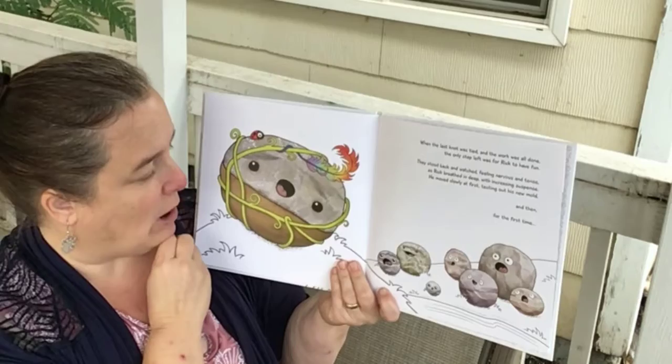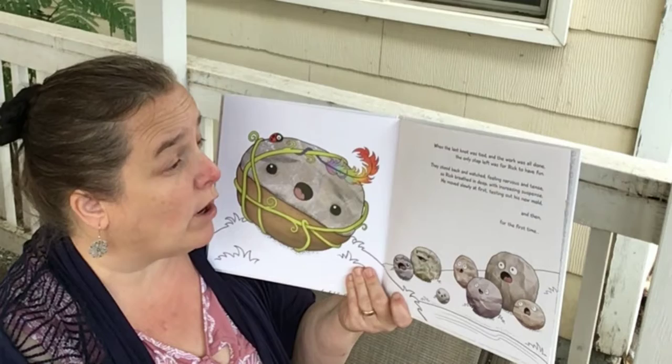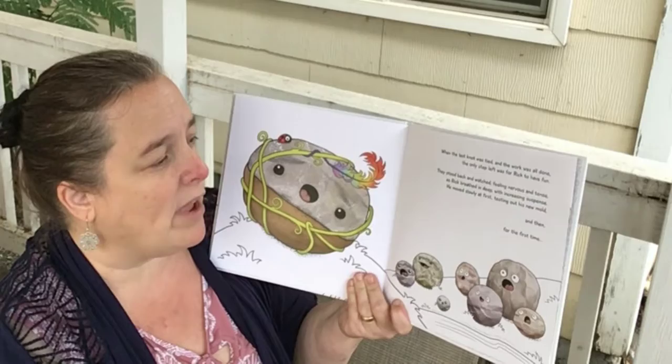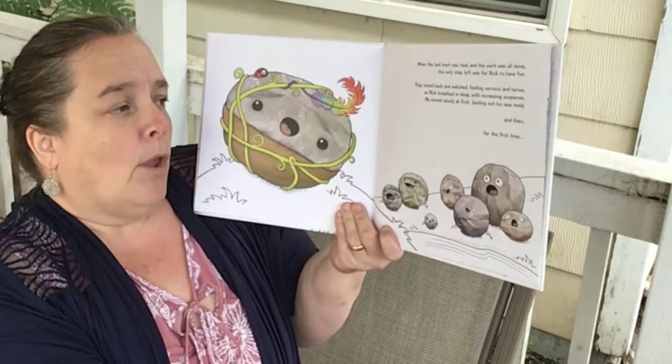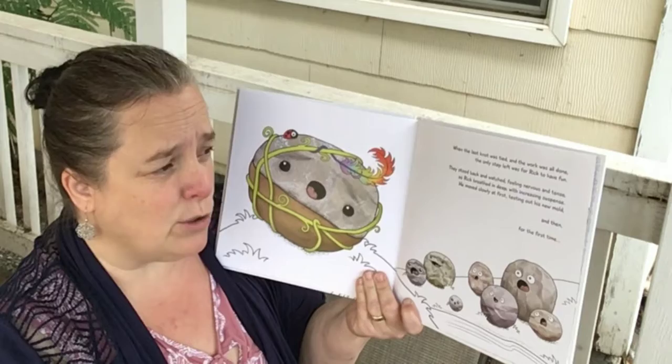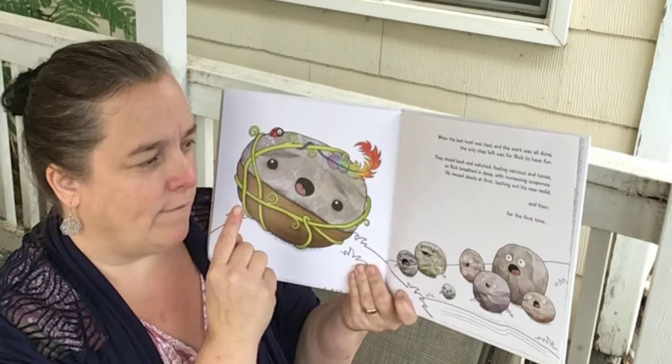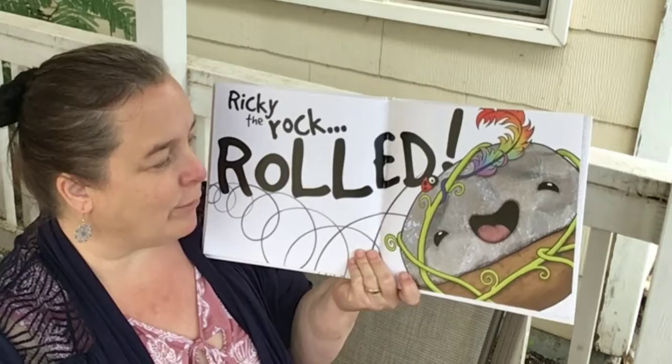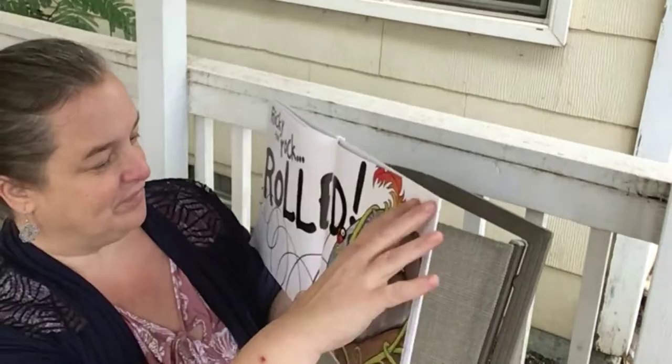When the last knot was tied and the work was all done, the only step left was for Rick to have fun. They stood back and watched, feeling nervous and tense, as Rick breathed in deep with increasing suspense. He moves slowly at first, testing out his new mold — testing his new round shape. And then, for the first time, Rick the Rock rolled! It worked! He's rolling! Look at his joyful face — he's so happy!